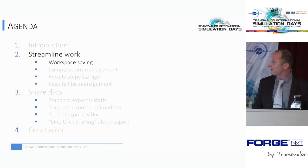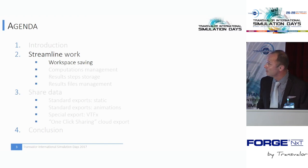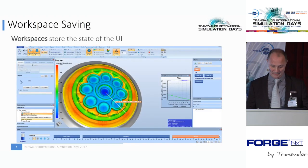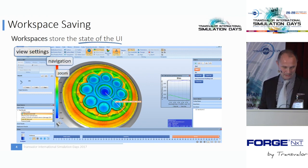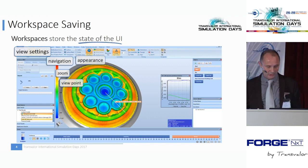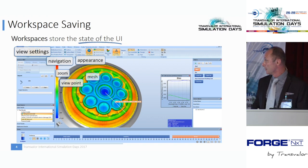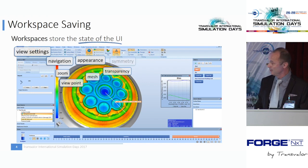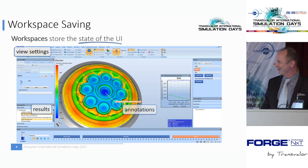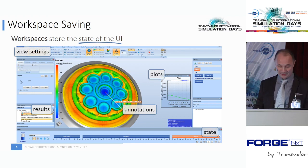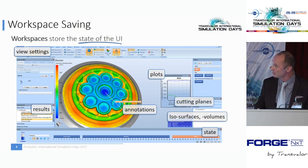The first point is about workspace saving. When we speak about workspace, we speak about the state of the user interface: view settings such as your specific navigation and zoom factors in your graphical view, viewpoints on your objects, appearance settings like displaying the mesh, transparency, symmetries in your model, the results you are displaying, annotations, plots, current state displayed, cutting planes, ISO surfaces, ISO volumes, and systems — all the things you would like to have in your view.